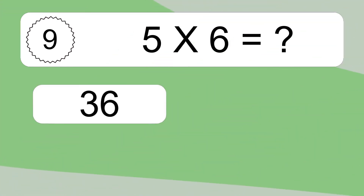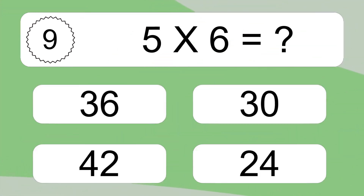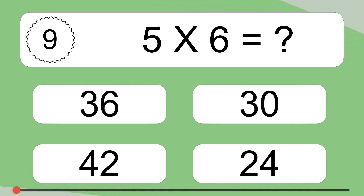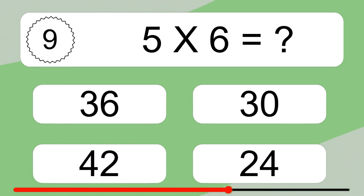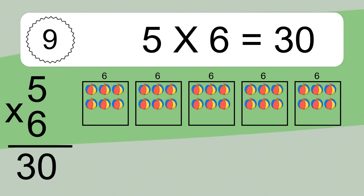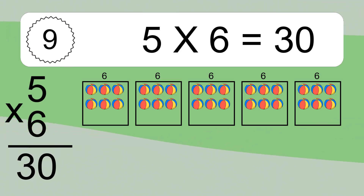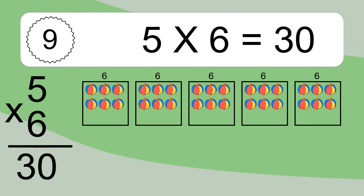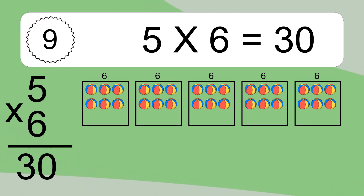5 times 6 equals what? We have 5 boxes, and each box has 6 colorful balls inside. If you count all the balls in all the boxes together, you will have 5 times 6 balls. This equals 30 balls.